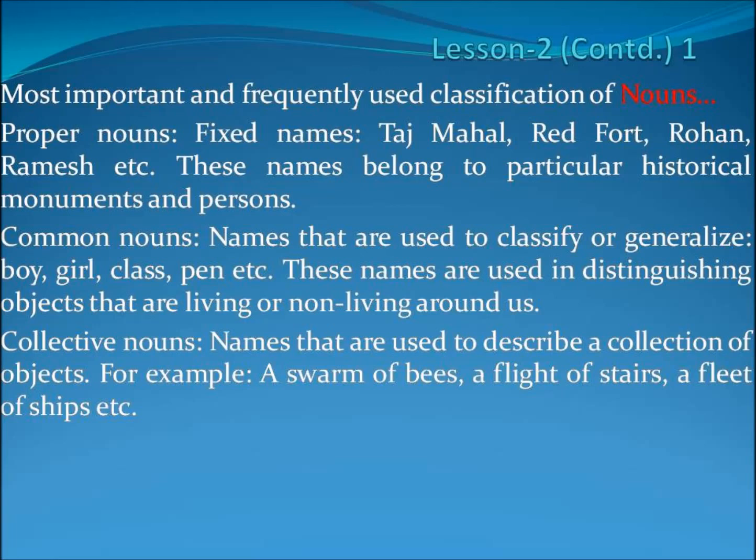We are continuing with lesson 6. Most important is to quickly cover the classification of nouns. Proper nouns — names like Taj Mahal, Redfoot, Rohan, Dhramesh. These names belong to particular historical monuments and persons. These names cannot be substituted.